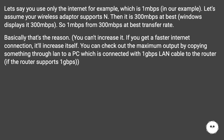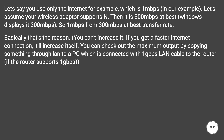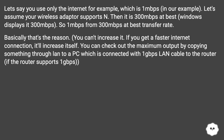Let's say you use only the internet, which is one megabit per second in our example. If your wireless adapter supports N, then it is 300 megabits per second at best — Windows displays at 300 megabits per second. So one megabit per second from 300 megabits per second at best transfer rate — that's basically the reason. You can't increase it; if you get a faster internet connection it'll increase itself. You can check out the maximum output by copying something through LAN to a PC connected with a 1 Gbps LAN cable to the router, if the router supports 1 Gbps.